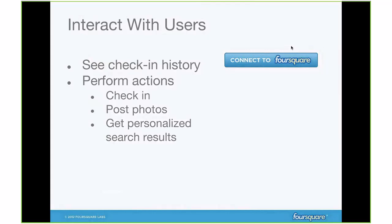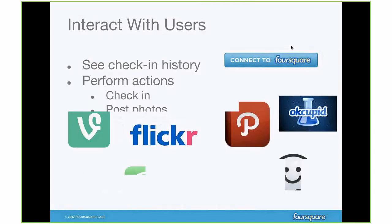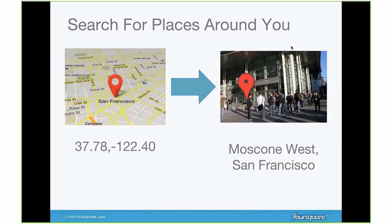The second main thing you can do with the API is interact with Foursquare users. You can see somebody's check-in history — that's what I was visualizing before with that time machine app we built. You can also perform actions on behalf of the user: check somebody in, post photos, and get personalized search results. If you connect with Foursquare users, the search results become personalized — when you pass in a lat/long, we tell you not only what's around you but relevant social signals, like which friends have been to this place or left tips here. If we know you prefer classier restaurants, we'll bubble those over fast food chains.